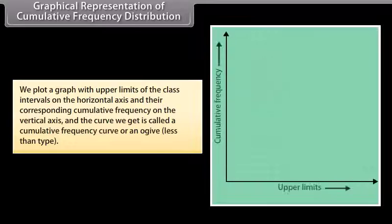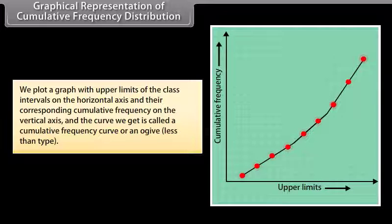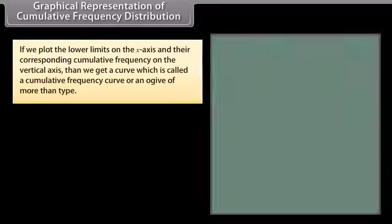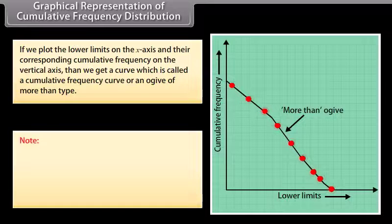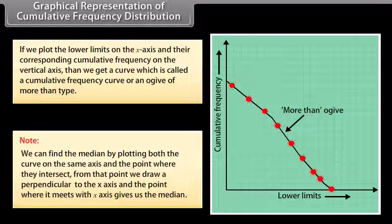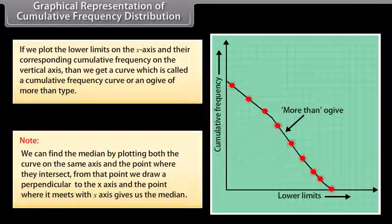Graphical representation of cumulative frequency distribution. Plot a graph with upper limits of class intervals on the horizontal axis and their corresponding cumulative frequency on the vertical axis — the curve obtained is called a cumulative frequency curve or an ogive of less than type. If lower limits are plotted on the x-axis instead, the curve is called an ogive of more than type. The median can be found by plotting both curves on the same axes — at the point where they intersect, draw a perpendicular to the x-axis; that point gives the median.